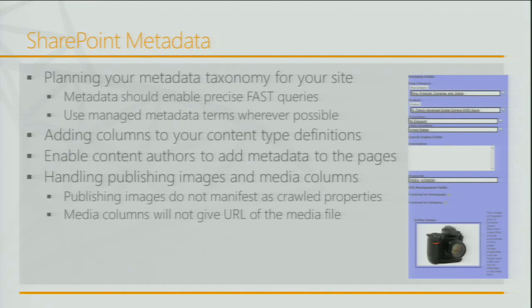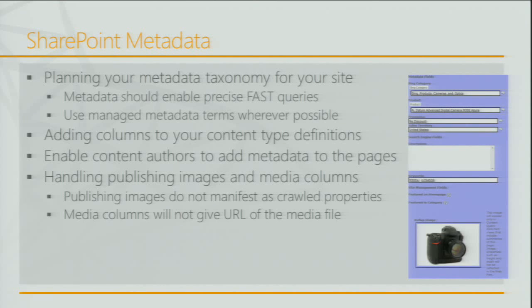There are a couple of column types to handle differently. Publishing images, when you crawl a publishing site, don't manifest as crawled properties — and if they're not a crawled property, you can't make them a managed property. The other column type is the media column. Within SharePoint 2010 with digital asset management, the media column does manifest as a crawled property but only gives you metadata like bit rate and time — not the URL of the actual asset, which I needed to show video on the phone. I'll show how I handled both.